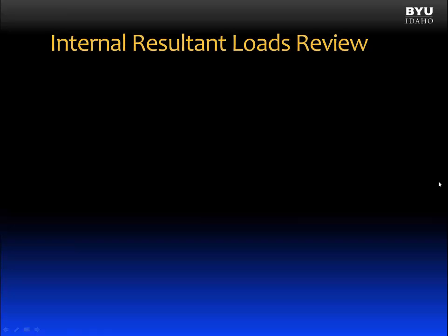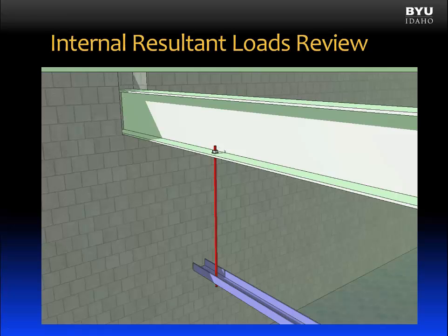In the last video, we talked about internal resultant loads. Let's look at an example. Here is a simple structure — it's a hanger, the red rod shown, connected to a larger structural beam and supporting a load.